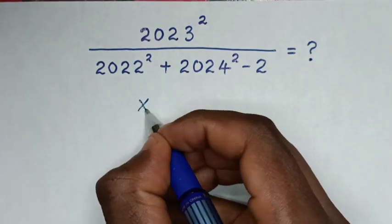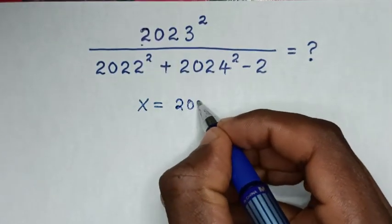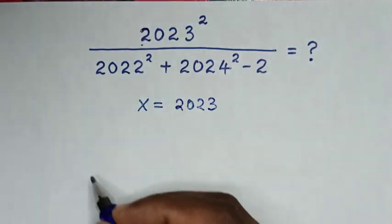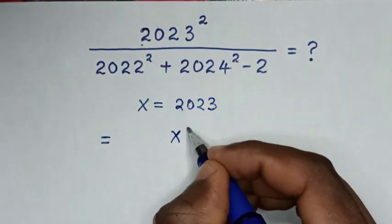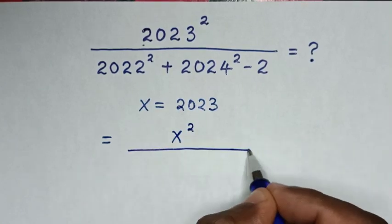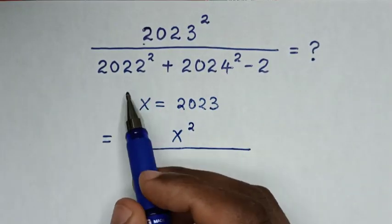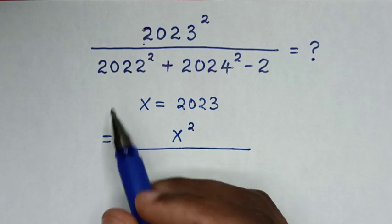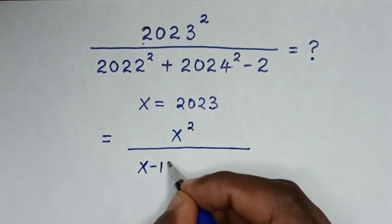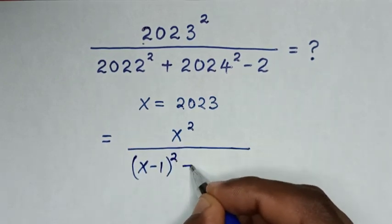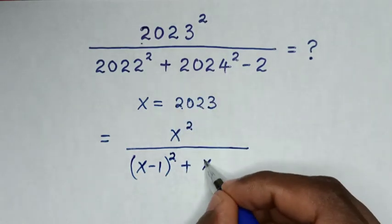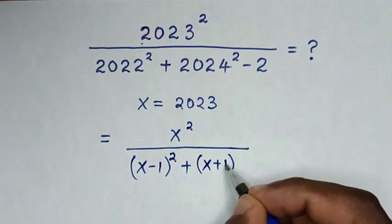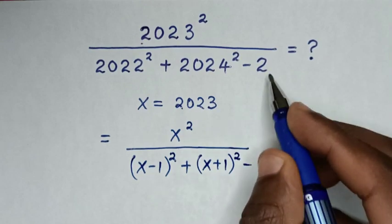First we let x equal 2023. It will be equal to x square, then over 2022 is x minus 1, so it will be x minus 1 bracket square, plus 2024 is x plus 1, so it will be x plus 1 bracket square, then minus 2.